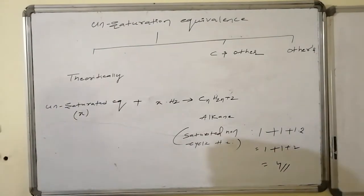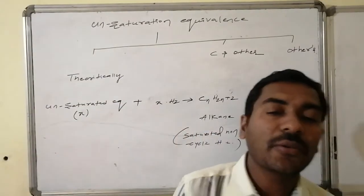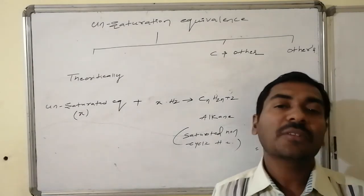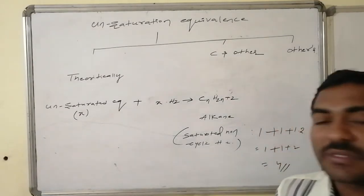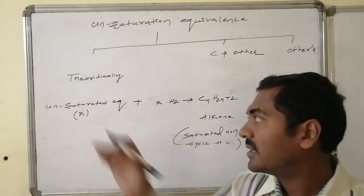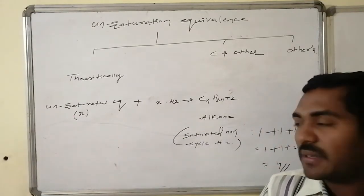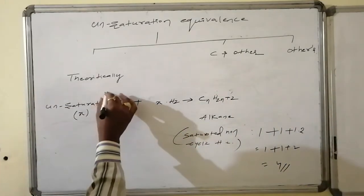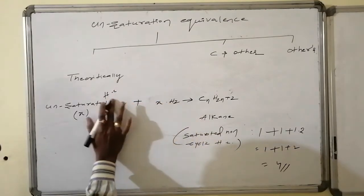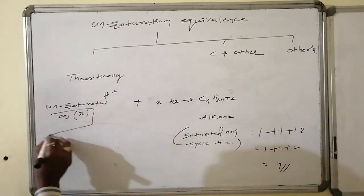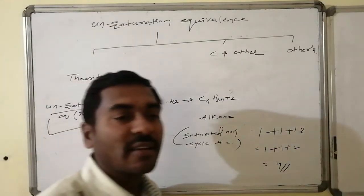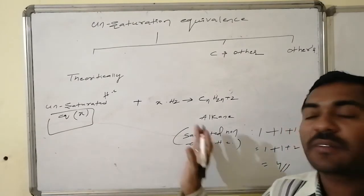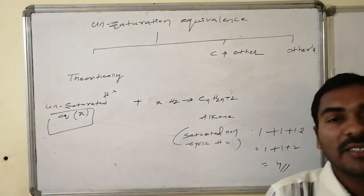Theoretically, the unsaturation equivalence present in an organic molecule tells us how many hydrogen molecules it would react with. If the unsaturation equivalence is x, then on theoretical reaction with x molecules of hydrogen, the compound is converted to a saturated non-cyclic hydrocarbon with the formula CₙH₂ₙ₊₂.